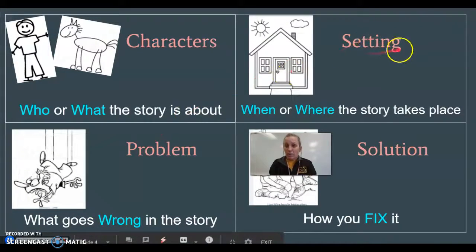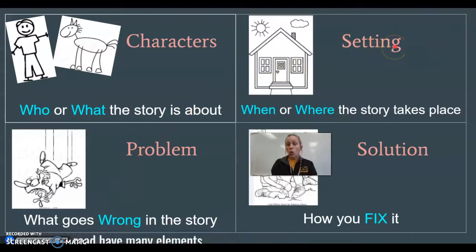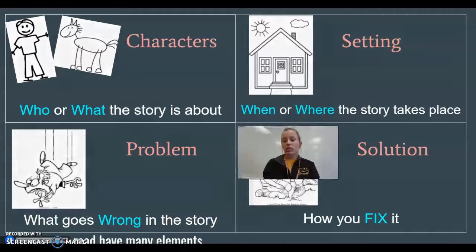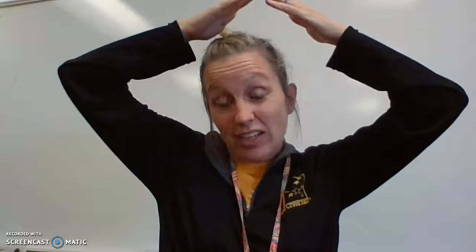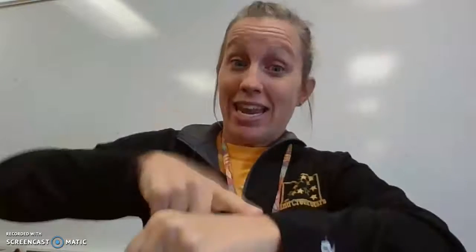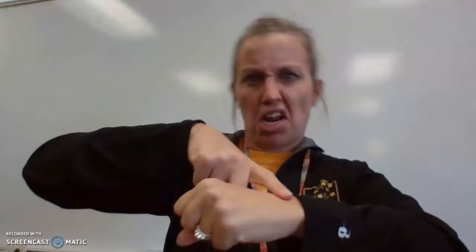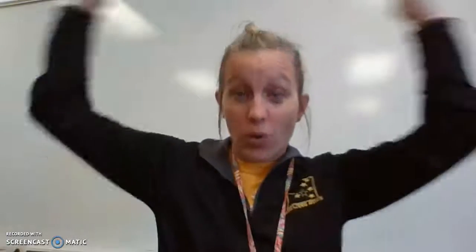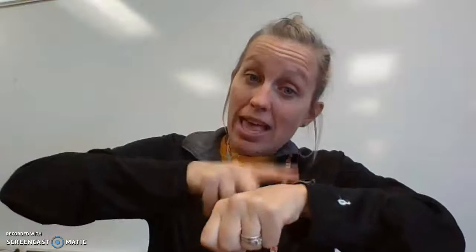Our setting — right here where my pointer is — the setting is when or where the story takes place. There's a picture of a little house to help you remember. When we talk about the setting, we make a little house on top of our heads. Setting is when — point to your watch, like when is it happening? Daytime? Nighttime? Two o'clock? When or where? Try it with me: setting is when or where. Characters are who or what, the setting is when or where.